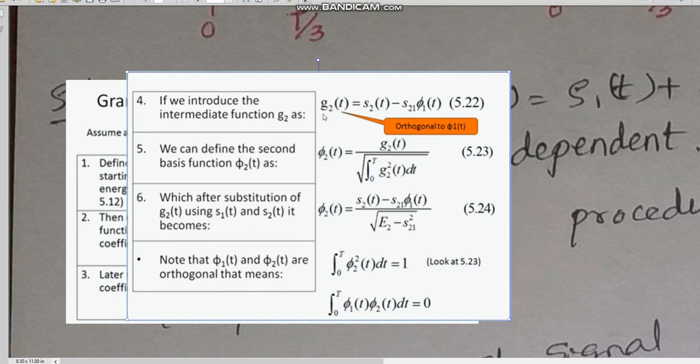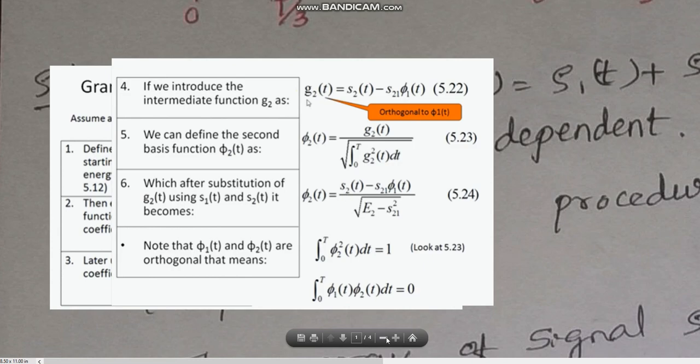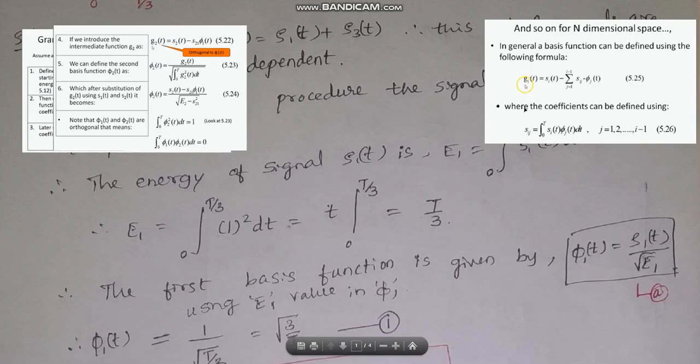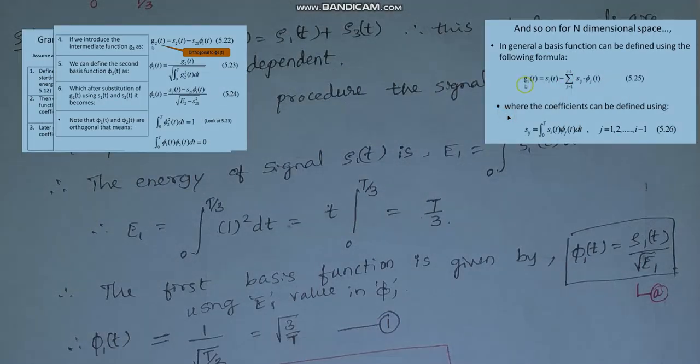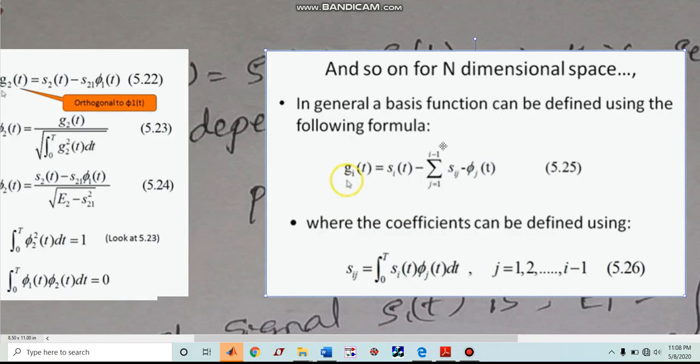So what is next? We will have to calculate Gi of t here. For more than two orthonormal basis functions, we are going to calculate G of t function using this equation. Here, I will be 3 now. Already G2 we have calculated. Next value of I is 3.